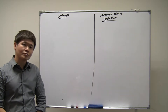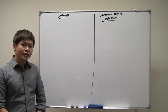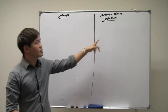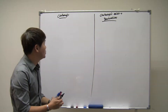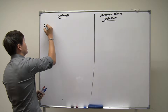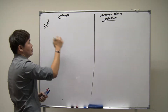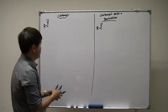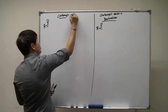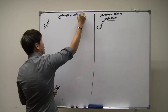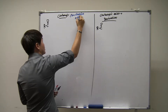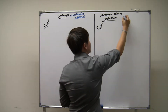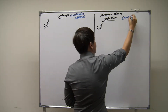Hi, this is Dion again from focuschemistry.com. In the previous session we talked about the difference between carbonyls reactions and the derivatives reactions. Even though both of them contain the same C=O double bond, we saw previously that the carbonyls prefer to undergo nucleophilic addition reactions and the derivatives prefer to undergo nucleophilic substitution reactions.